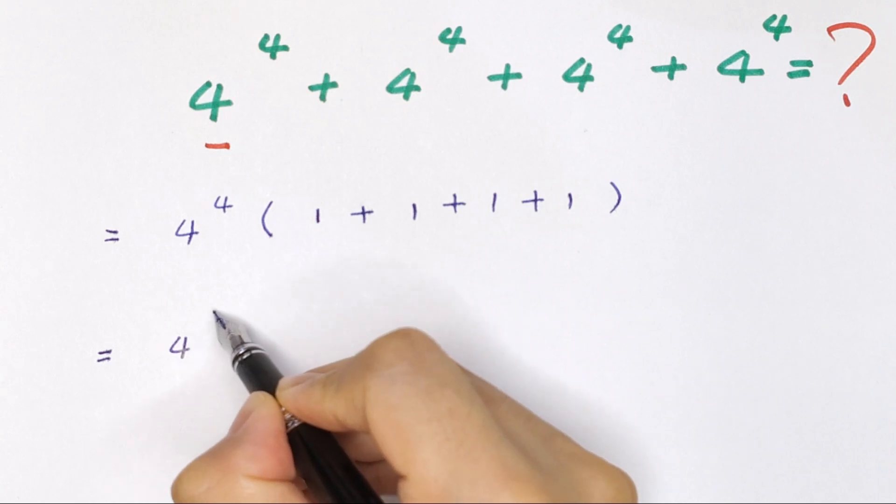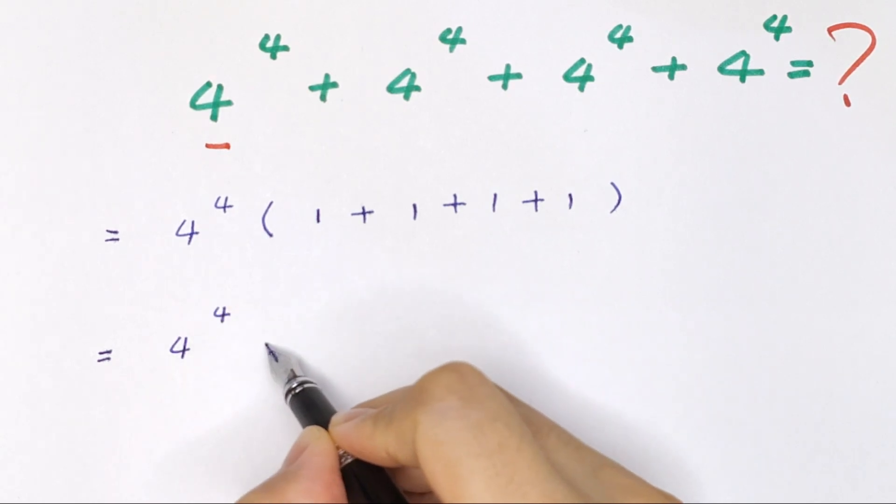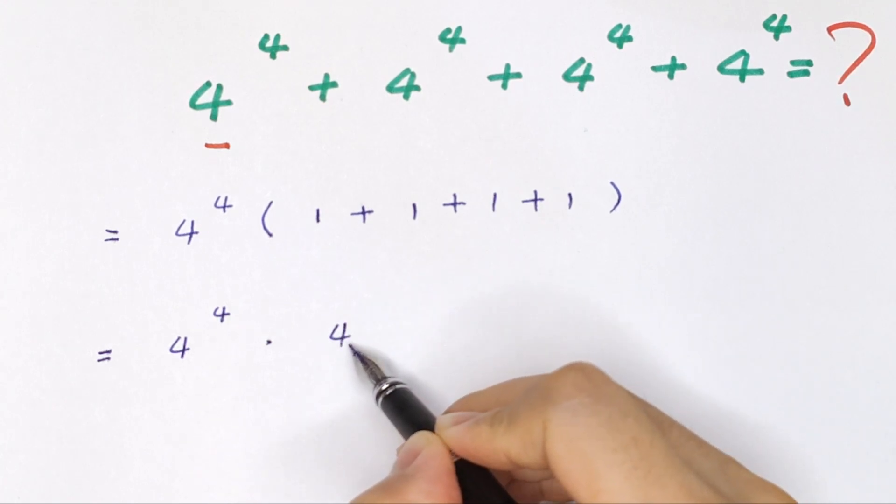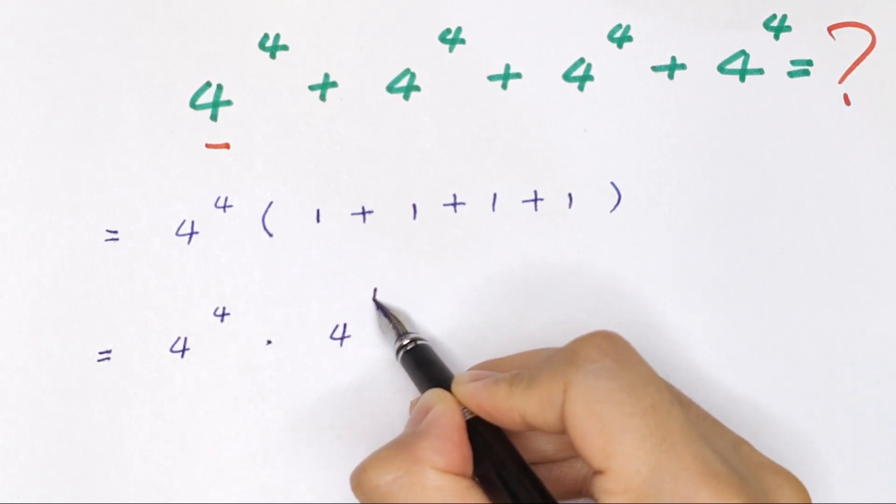4 to the power of 4 times 1, 2, 3, 4. This simplifies to 4 to the power of 1.